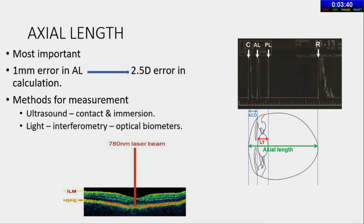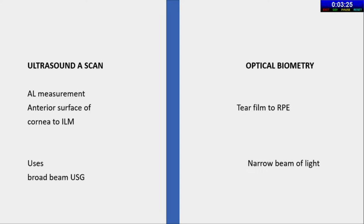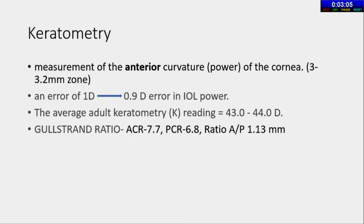The important methods of axial length measurement are ultrasound (contact or immersion) and optical interferometry via optical biometers. In ultrasound A-scan, the axial measurement is from the anterior surface of the cornea to the internal limiting membrane. In optical biometry, it is from the tear film to the retinal pigment epithelium. Keratometry measures the central 3 to 3.2 mm zone, and an error of 1 diopter causes approximately 0.9 diopter error in IOL power, with average readings of 43 to 44 diopters.